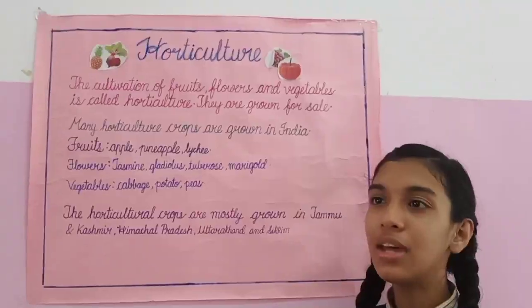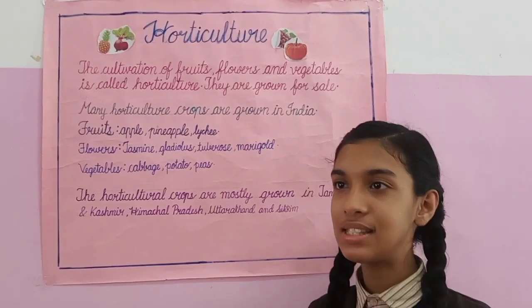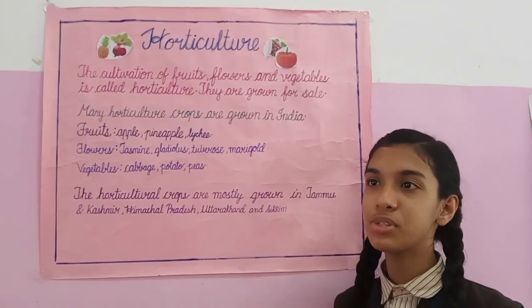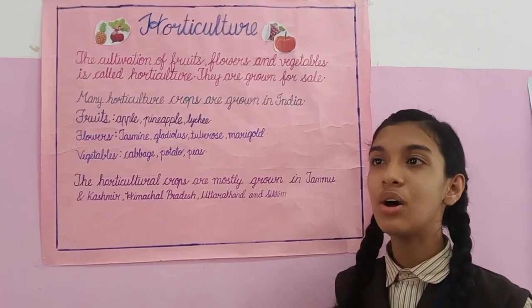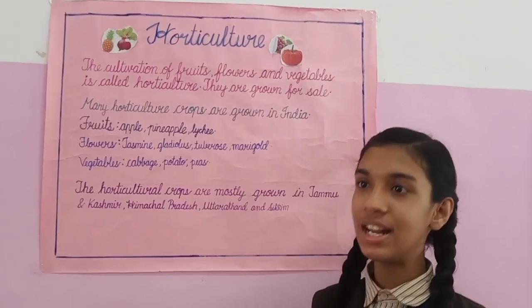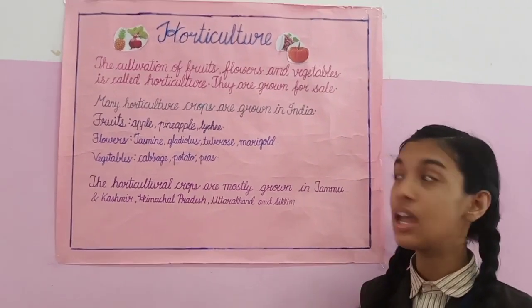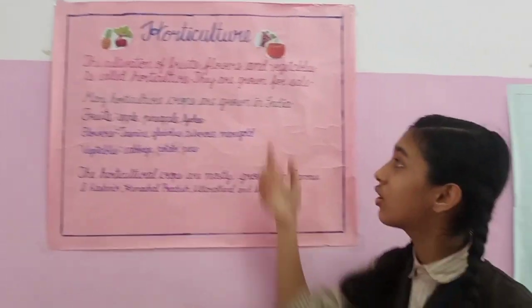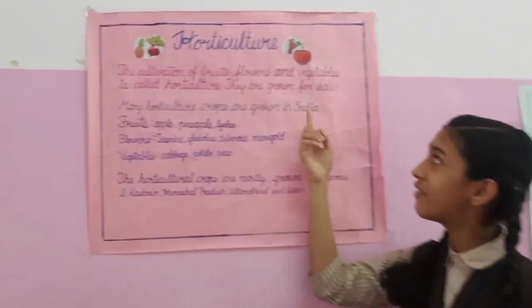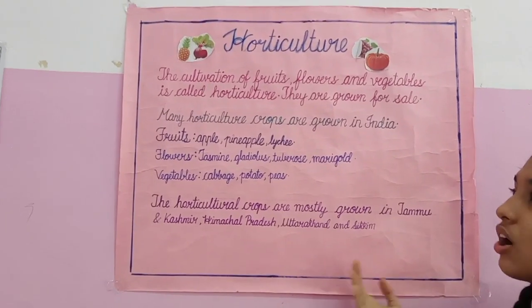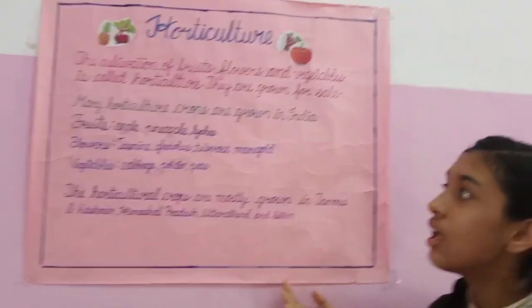I am Ashlee Marie from class 8. We are going to explain different forms of farming culture. They are sericulture, horticulture, pisciculture, and viticulture. The first one is horticulture. The cultivation of fruits, flowers, and vegetables for economic sale is called horticulture.